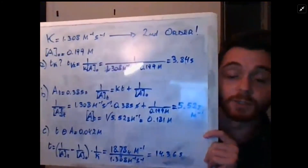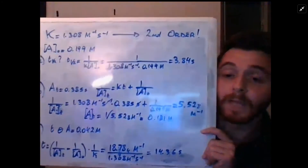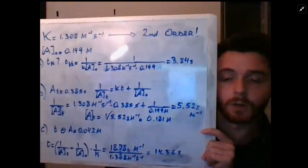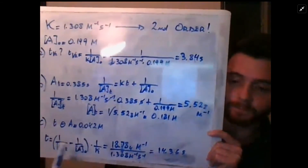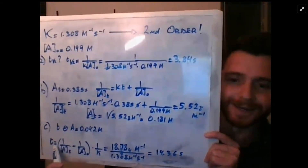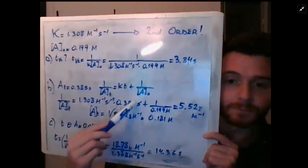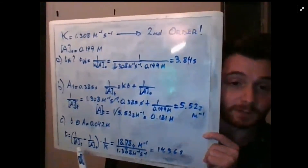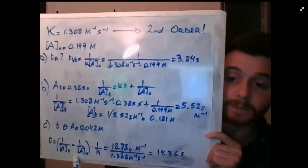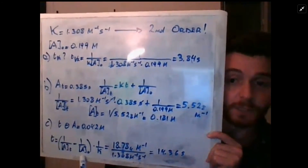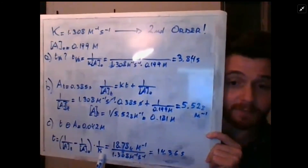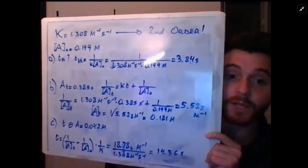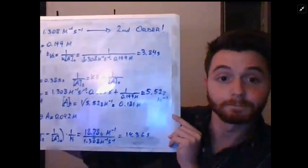Finally, we want to find the time it takes for the concentration of A to reach 0.04 molar. We rearrange the integrated rate law to solve for t: t is equal to one over the concentration at time t minus one over the initial concentration, all divided by k. Plugging in values and canceling units, we get 14.36 seconds.